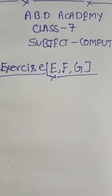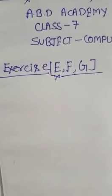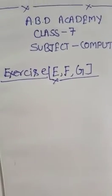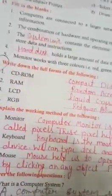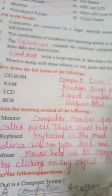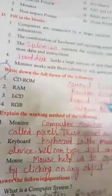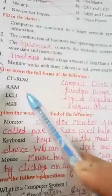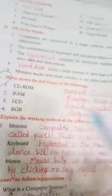For Class 7, subject Computer, Exercise E, F, G. Exercise E: Write down the full form of CD-ROM.